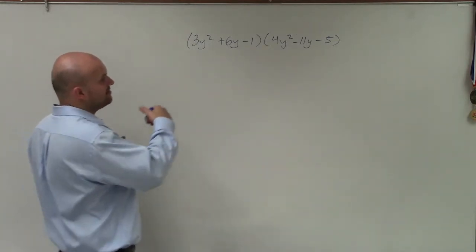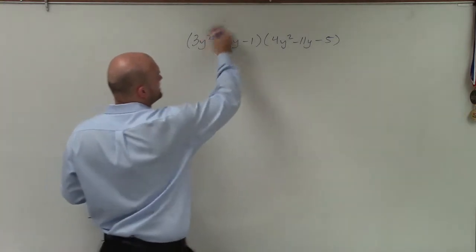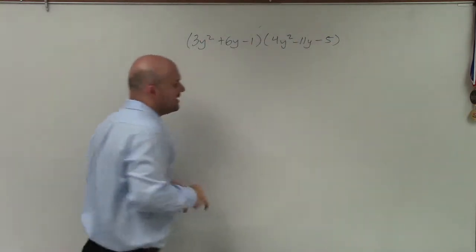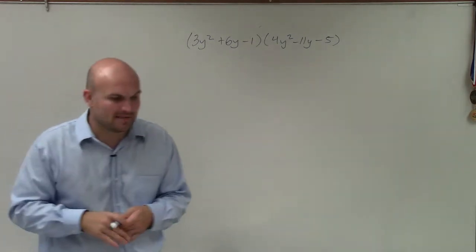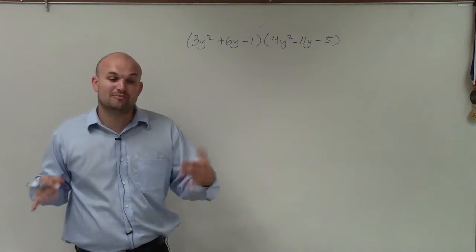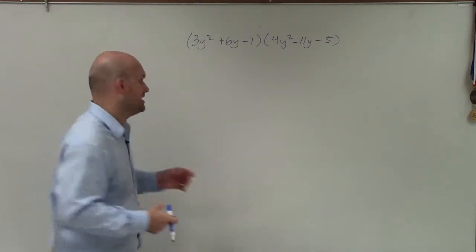So you can definitely apply the distributive property—multiply this term times all those, this one times all those, this one times all those, and then combine your like terms. But what I found with myself and with other students is it's very easy to make mistakes as well as get unorganized.